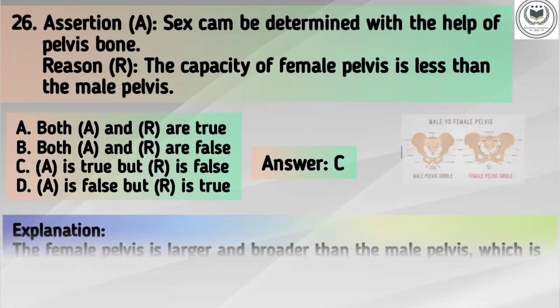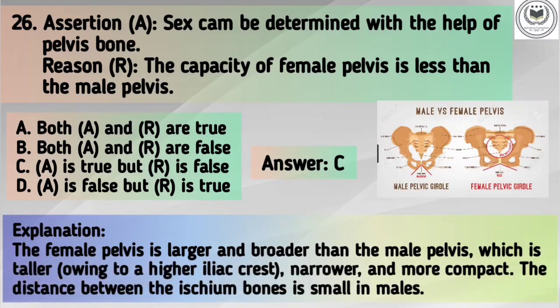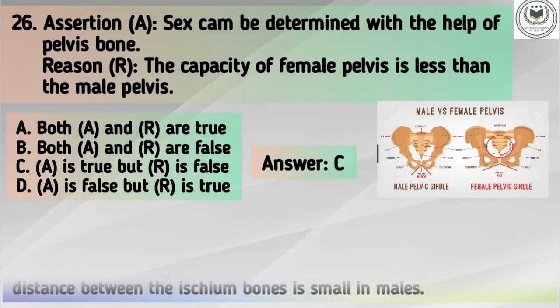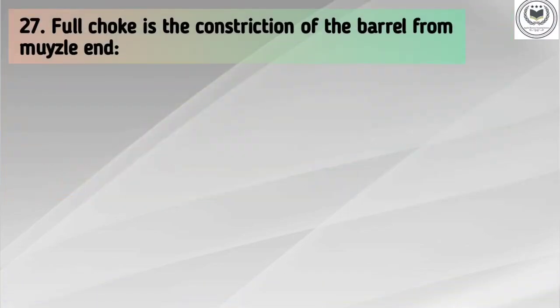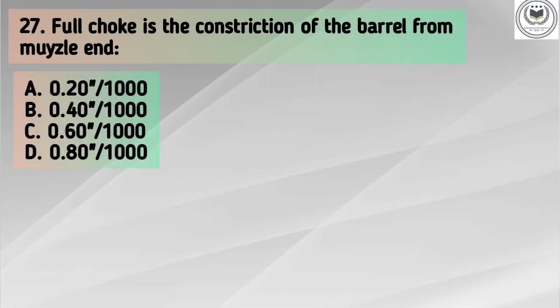Explanation: The female pelvis is larger and broader than the male pelvis, which is taller owing to a higher iliac crest, narrower and more compact. The distance between the ischium bonds is small in males. Question number 27. Full choke is the constriction of barrel from the muzzle end. Options: A. 0.20 by 1000 inches, B. 0.40 by 1000 inches, C. 0.60 by 1000 inches, D. 0.80 by 1000 inches.